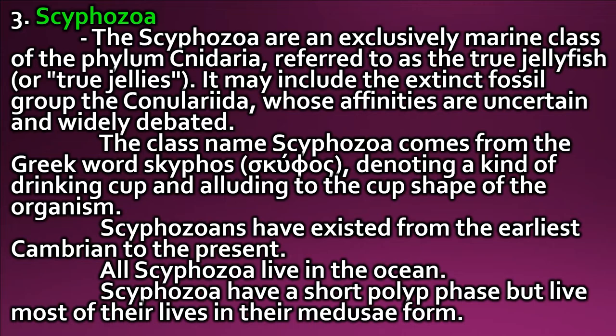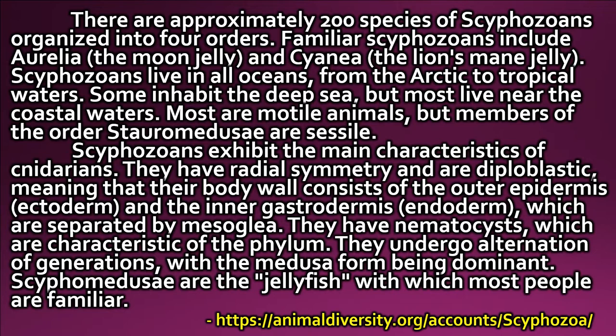Scyphozoa have a short polyp phase but live most of their lives in their medusa form. There are approximately 200 species of Scyphozoans organized into four orders. Familiar Scyphozoans include Aurelia, the moon jelly, and Cyanea, the lion's mane jelly. Scyphozoans live in all oceans, from the Arctic to tropical waters. Some inhabit the deep sea, but most live near coastal waters.